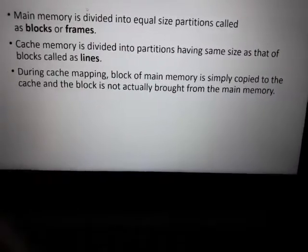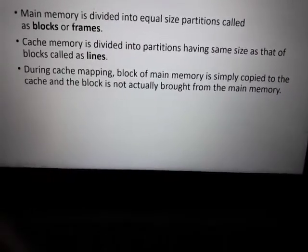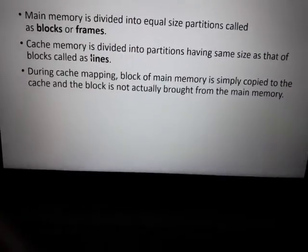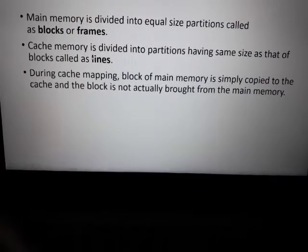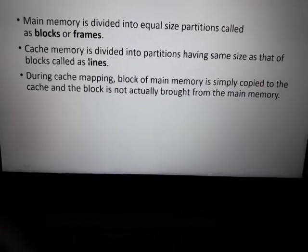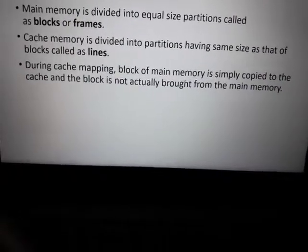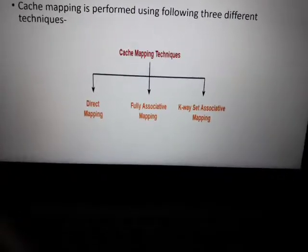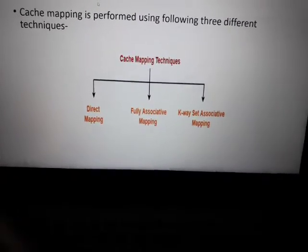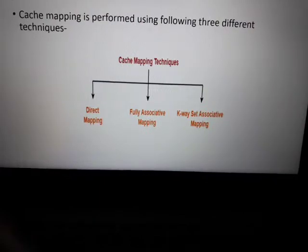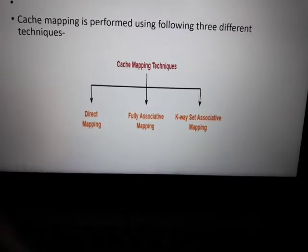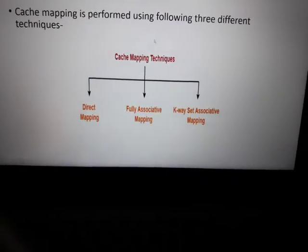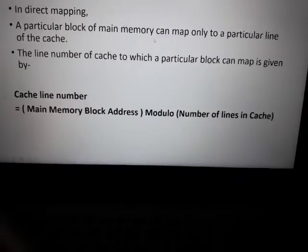Main memory is divided into partitions called blocks; cache memory is divided into partitions called lines. There are three types of cache mapping techniques: direct mapping, fully associative mapping, and K-way set associative mapping.